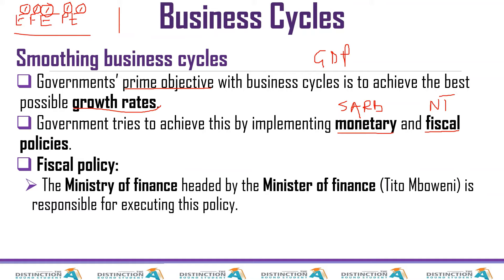The fiscal policy is what our finance minister implements — he is the one who is responsible. When I'm doing this video, the current minister of finance is Tito Mboweni. He used to be the governor of the Reserve Bank, so he was responsible at one point for the monetary policy, and now he is responsible for the fiscal policy.